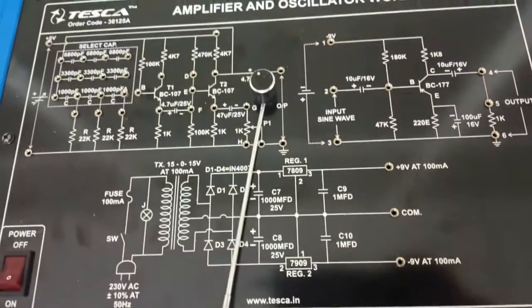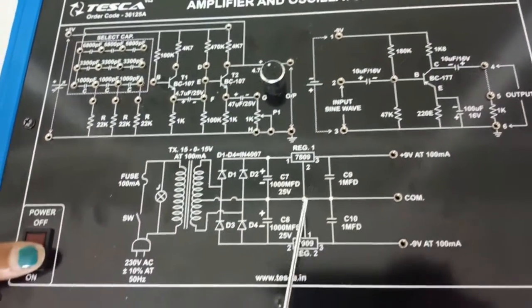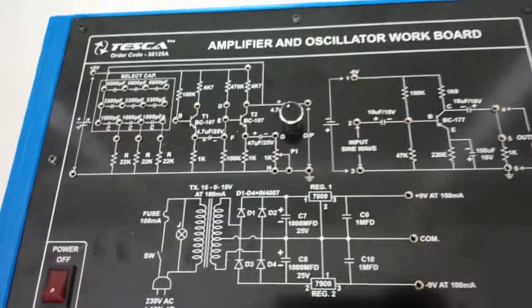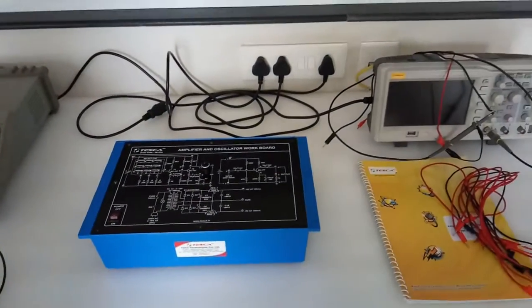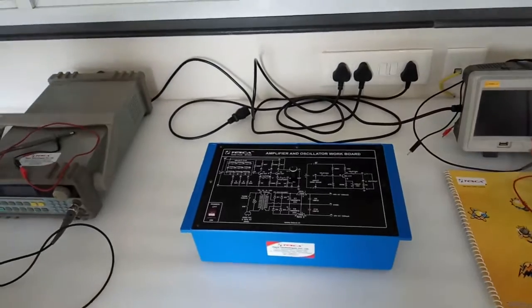This is a 1k potentiometer. This is the main switch to turn on or off the kit power. This is the user manual and patch cords. These all are included in this kit.